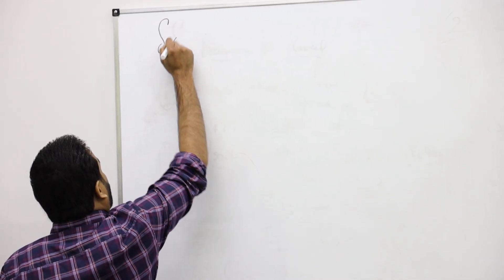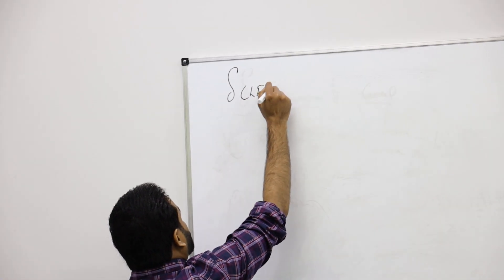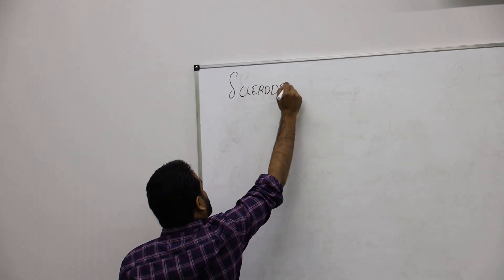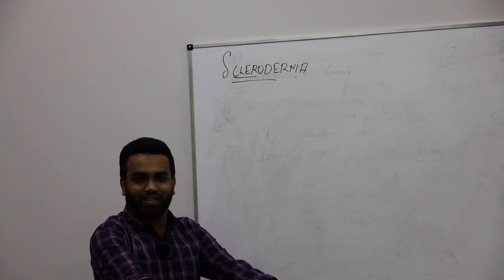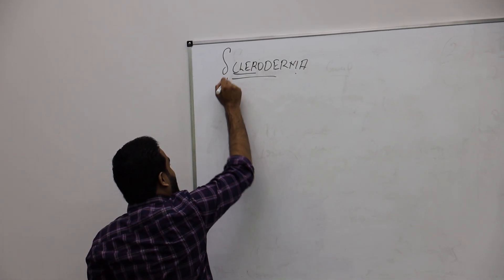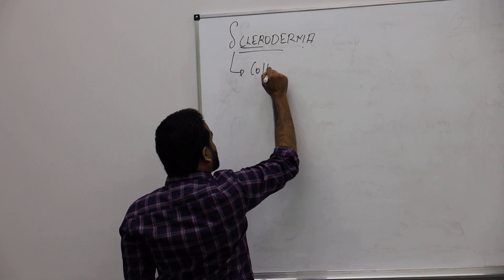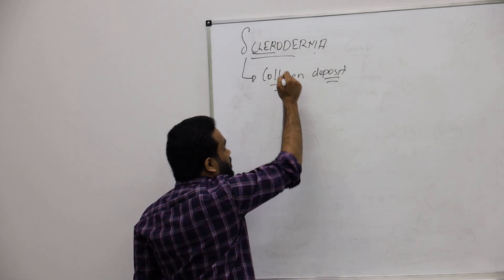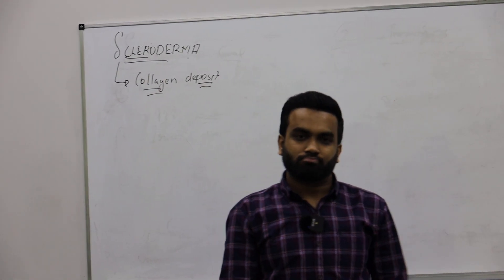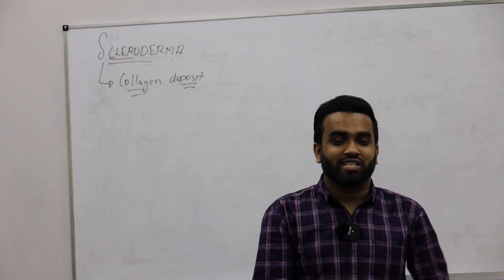Let's begin the rheumatology series with the most important and high yield topic: scleroderma. The word itself in Latin means sclero for hardening and derma for skin. This is actually a collagen deposit disease where autoimmune antibodies attack the collagen, which gets deposited and skin is replaced by collagen.